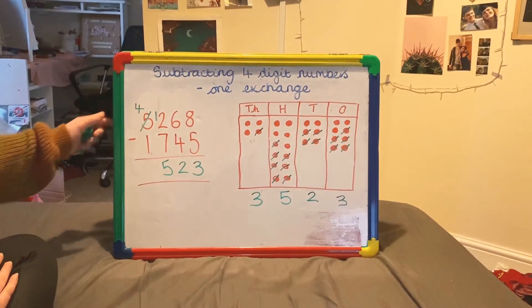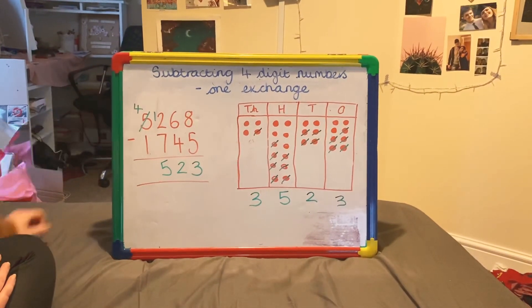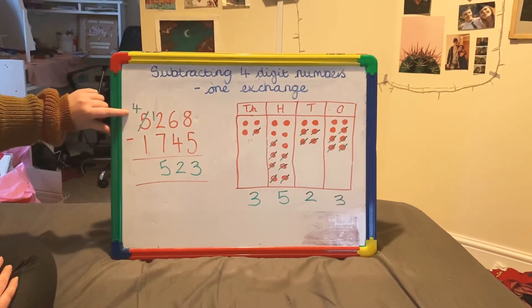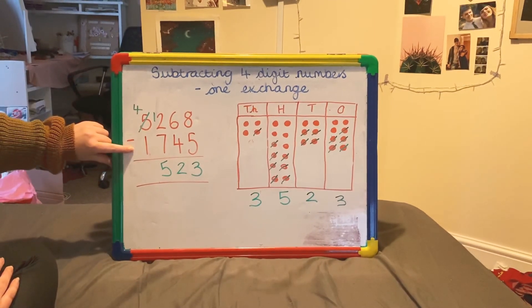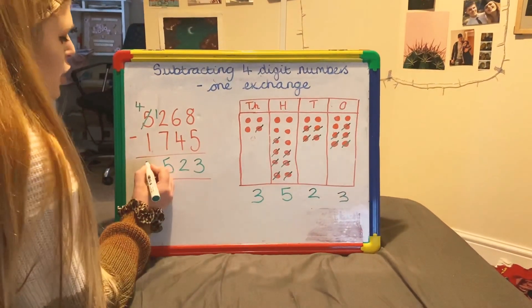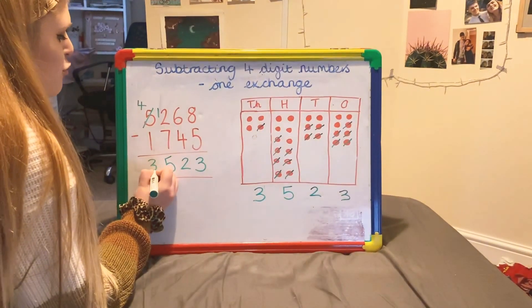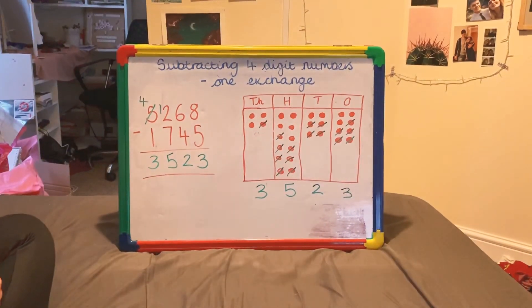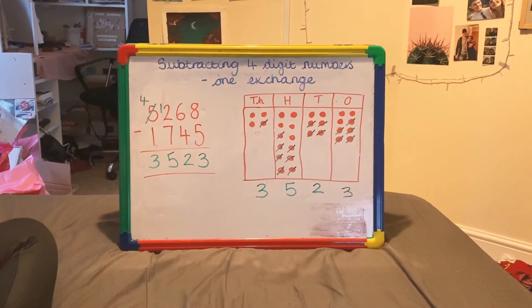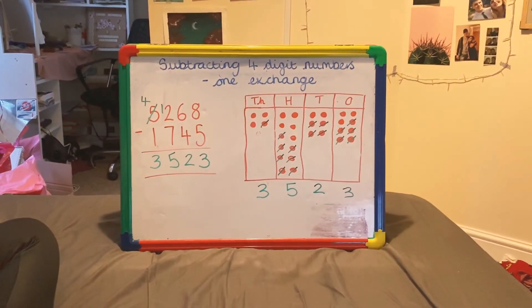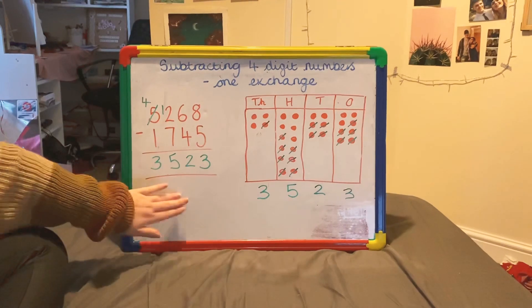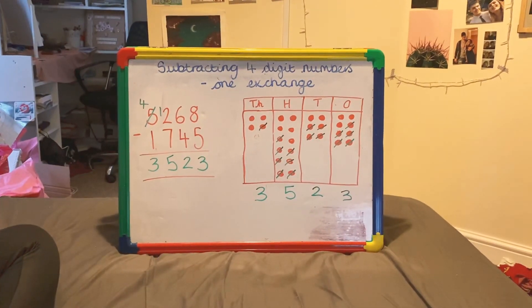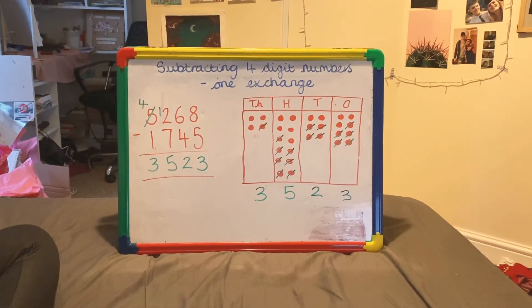Finally, I do my last step in my thousands column: 4,000 take away 1,000 is going to be 3,000. If I look across at both of my calculations — both pictorially and in the column method — I can see I've got the same answers.